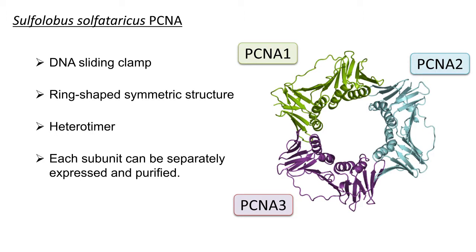Proliferating cell nuclear antigen, PCNA, is a DNA sliding clamp. It encircles DNA and provides a scaffold for DNA-related enzymes. Most PCNAs are homotrimeric proteins, but Sulfolobus acidocaldarius PCNA is a heterotrimeric protein.